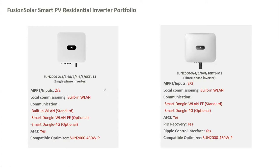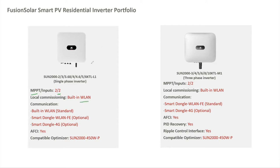Starting with our inverters and some characteristics — here we have the single-phase inverter. The design is very compact. There are no LCDs and no buttons on the inverter, because our policy is to replace an inverter if something breaks down. Commissioning is done using the Fusion Solar app. Powers go from 2 kW all the way up to 6 kW in different intervals. These inverters have two MPPTs and one string per MPPT, so you can have a maximum of two strings per inverter.